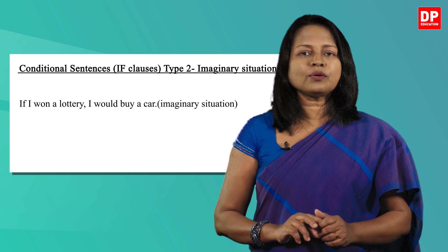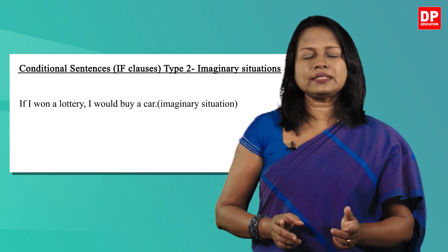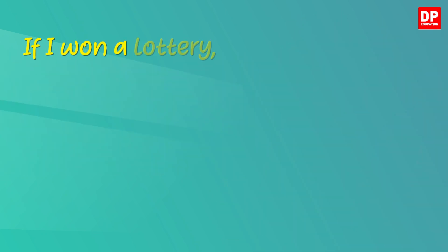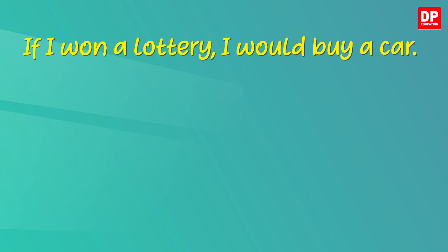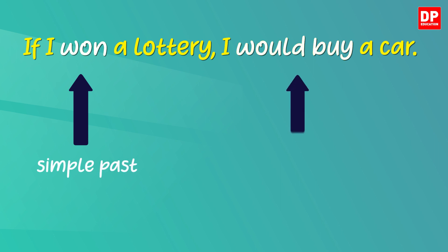Now let's see how a type 2 conditional sentence is written. As you can see, the verb of the conditional clause 'won' is in simple past tense. The verb in the result clause 'would buy' is written with 'would' plus the verb infinitive. Here the infinitive means the base form of the verb.